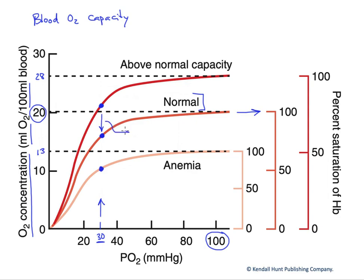That means we've unloaded 5 mils of O2 per 100 mils of blood passing through that tissue. We are helping to keep our tissues aerobic by delivering some fraction of what's being carried.